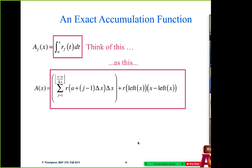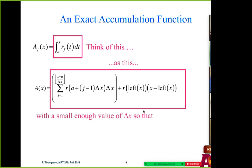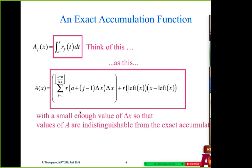From the accumulation to the integral, we made really small delta x intervals. Right, good. So you think of this — whenever you see integral, you think of it as the one-line approximate accumulation function with a small enough delta x, so that values of A are indistinguishable from the exact accumulation.